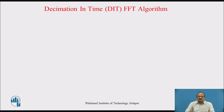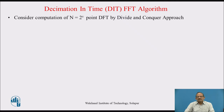Previously we have already seen the divide and conquer approach for computation of DFT, in which an N-point DFT can be computed in terms of smaller size DFTs. Let us consider N is 2 raised to v, so basically N is the power of 2, and we want to compute this DFT by using the divide and conquer approach.